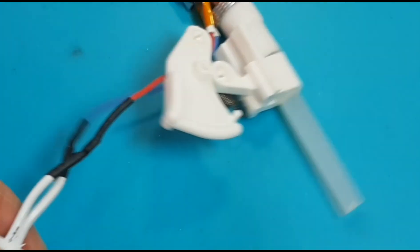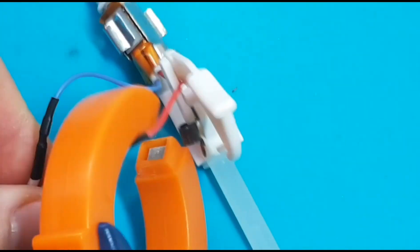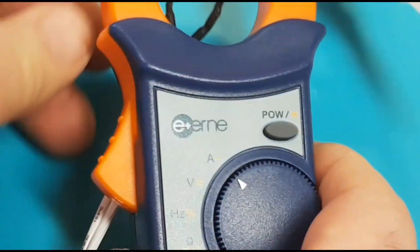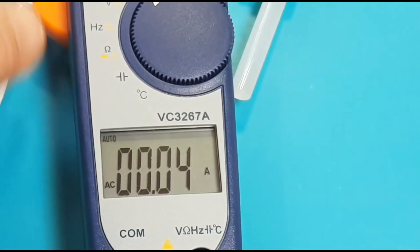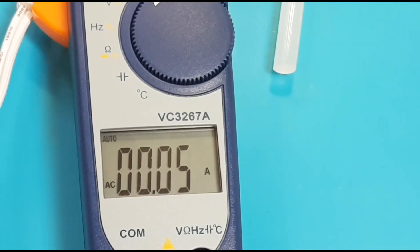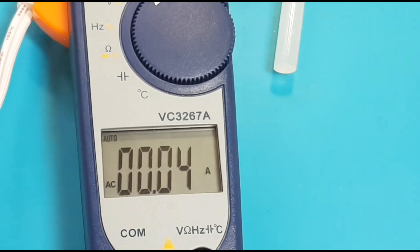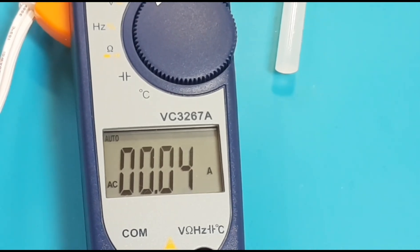And we're going to use the red, the hot wire, and we are going to take our clamp and just put it around the one wire. And as you can see, no worries. There you go. This little glue gun is consuming 0.05 amps.